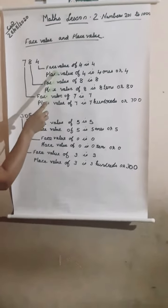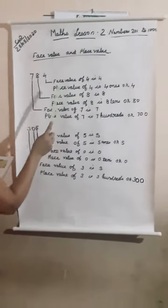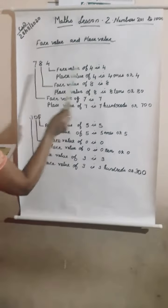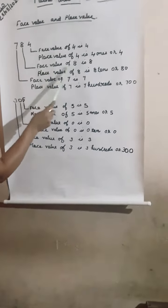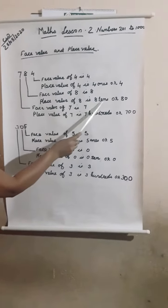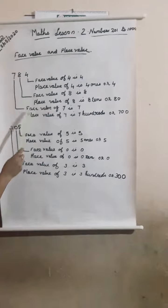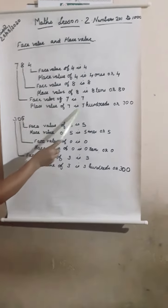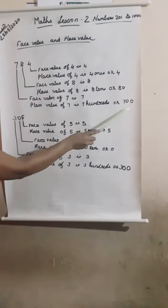784. Face value of 4 is 4. Place value of 4 is 4 ones, or 4. Face value of 8 is 8. Place value of 8 is 8 tens, or 80. Face value of 7 is 7. Place value of 7 is 7 hundreds, or 700.